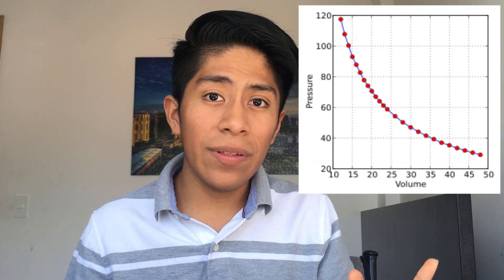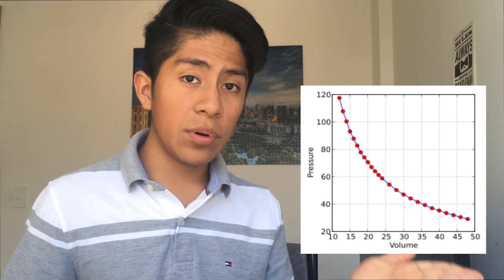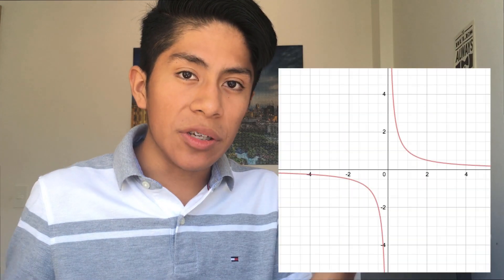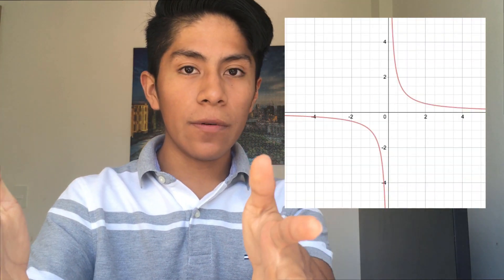We can spend all day doing this experiment — increasing the pressure and recording the data of the new volume. And if we join all this information, we get a graph like this. That's precisely what Robert Boyle did hundreds of years ago. He discovered that the relationship between volume and pressure is inversely proportional, meaning that if we increase the pressure, we decrease the volume. If we analyze the graph, it is similar to a reciprocal function — in fact, it is a reciprocal function.